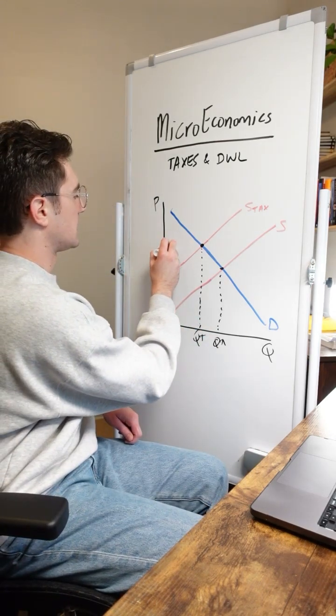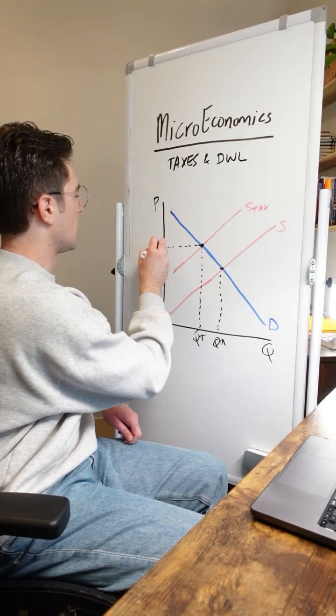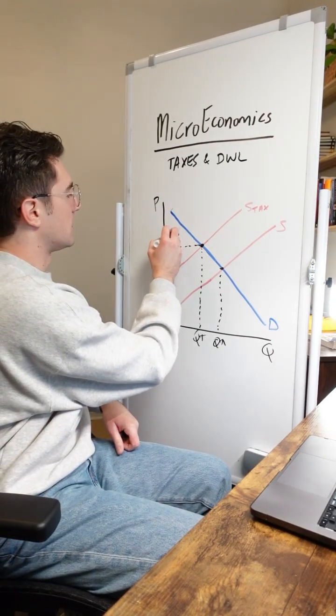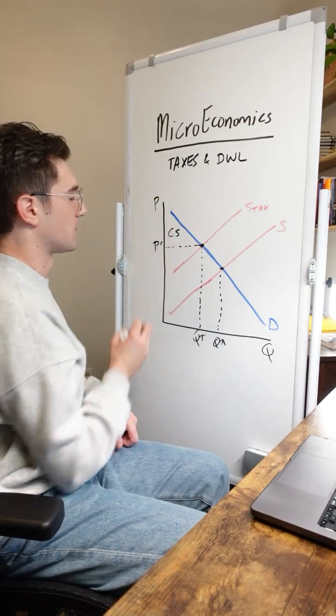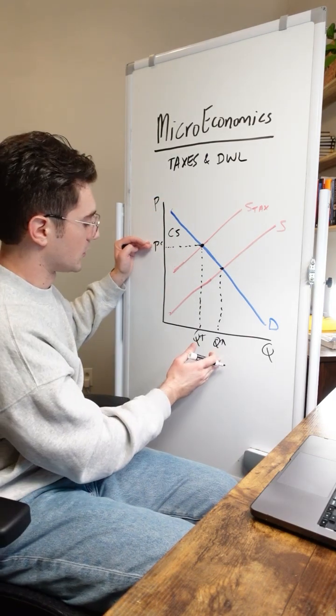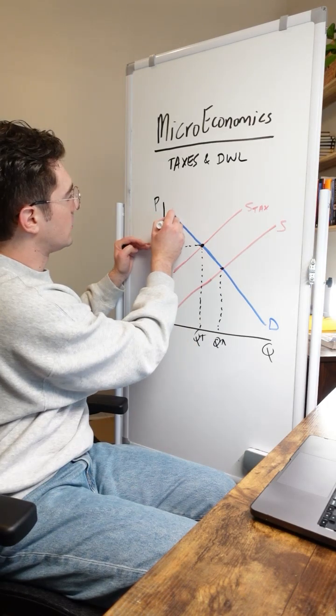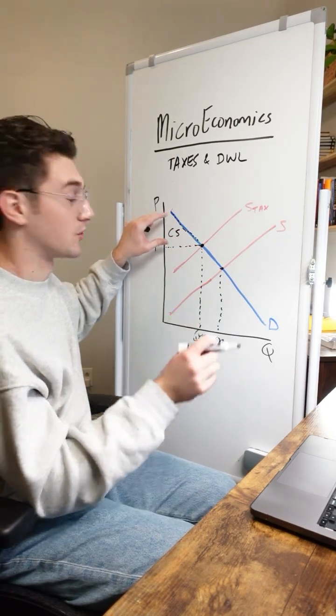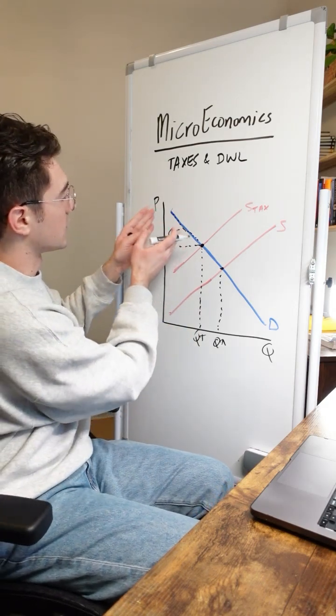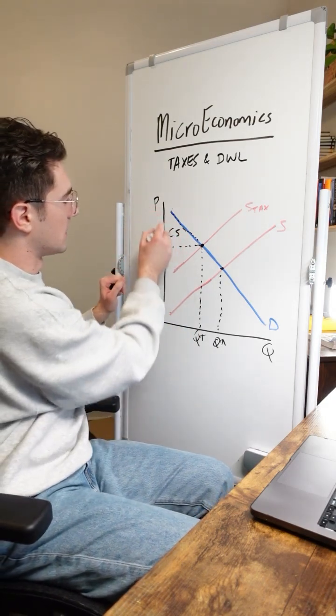But what I first want us to understand is that now consumers are going to be paying this price called PC right here, meaning that they're going to generate this triangle right here of consumer surplus. Remember, they used to be paying a price down here, but now they're paying up here. So there's fewer consumers buying and each of them value the good at this price right here. So their individual consumer surpluses are all these vertical heights that occur. And together, that makes this smaller consumer surplus triangle right here.